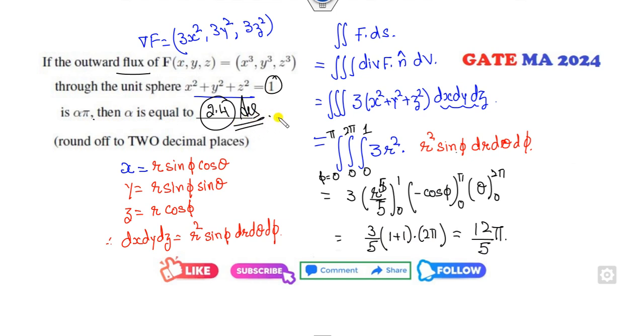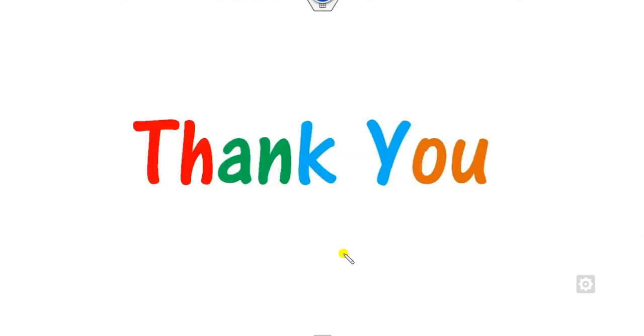So the answer is 2.4, which is the right answer for this problem. You can see with the help of spherical polar coordinates you can easily solve them. We will see the next lecture on Green's theorem and other ones. Till then, you can like, share, and comment on my videos. Best of luck students, happy learning.